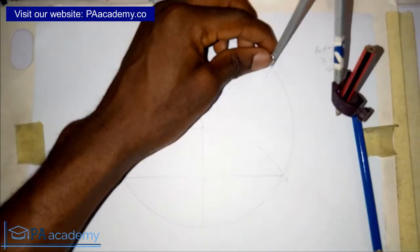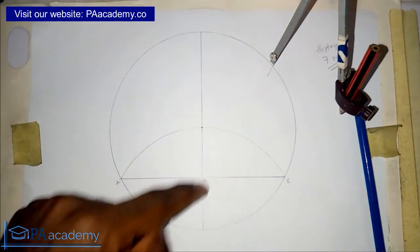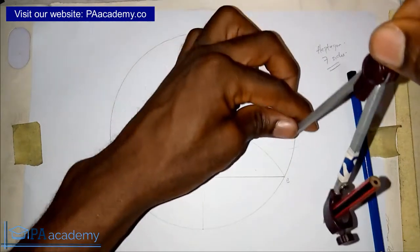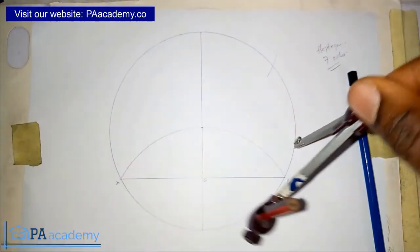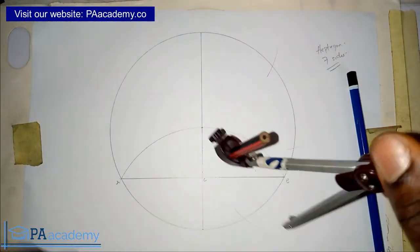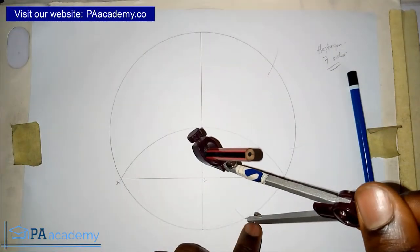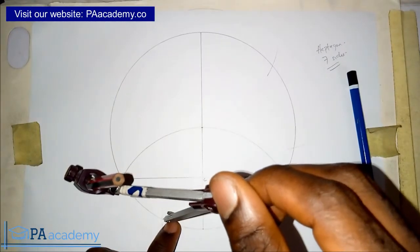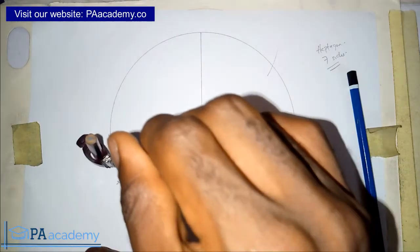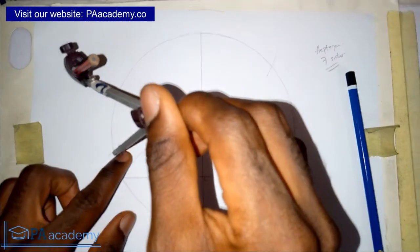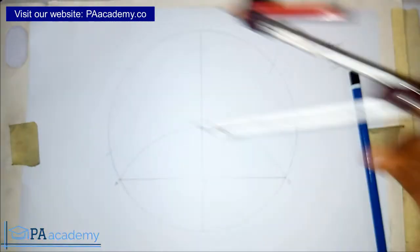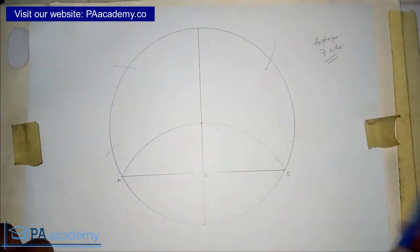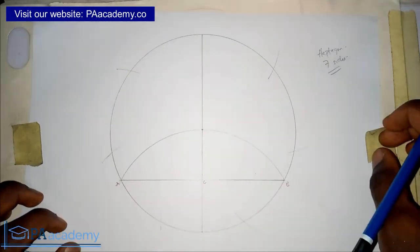Where this arc is touching the circumference of the circle with the same length of AC, we are going to bring it there and then we repeat the process again. Make sure your compass is on those arcs that we are marking.